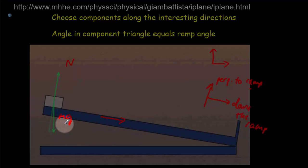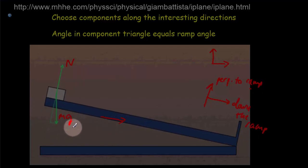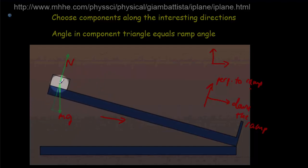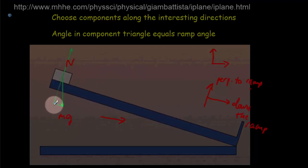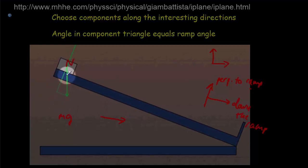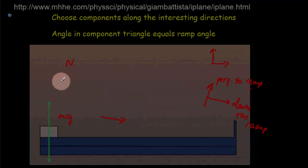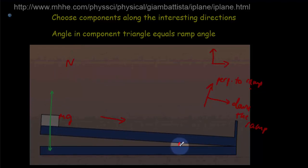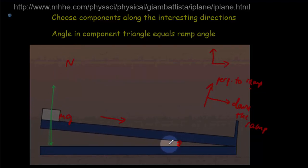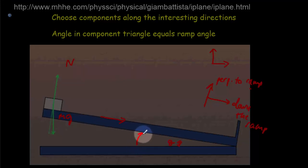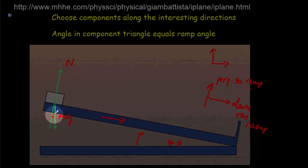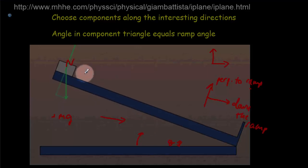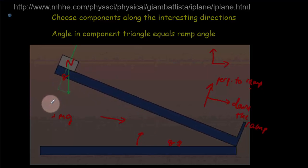It's the weight — the mg, the one that's straight down — that we need to resolve into components. When we draw our components, we expect the angle in the right angle triangle formed to be related to the angle of the ramp, theta. And you can see that as this angle theta grows, this angle in the triangle grows as well, so this angle here is going to be theta.